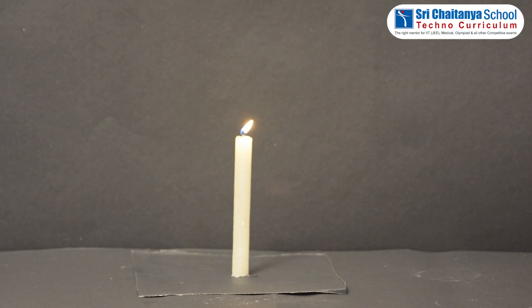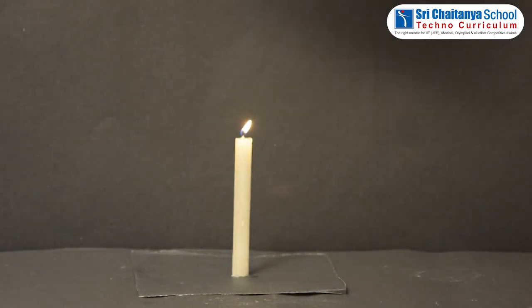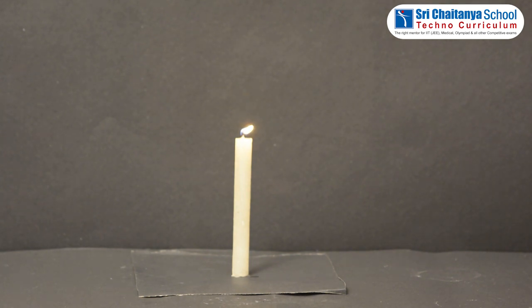So, let us observe by using a sheet of paper. Place the sheet of paper exactly opposite to the lighted candle. Children, now what can you observe? Can you see the candle? No. So, write down your observation in the tabular form.